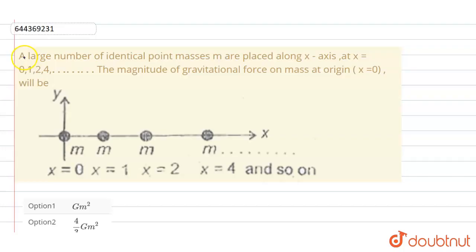Hello friend, this is our question. A number of identical point masses small m are placed along the x-axis at x equals 0, 1, 2, 4, and so on.